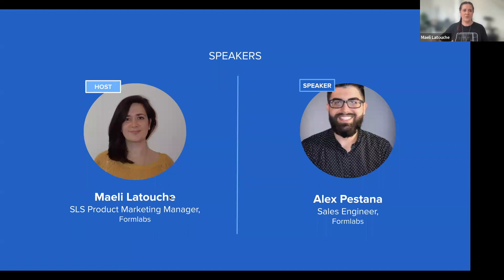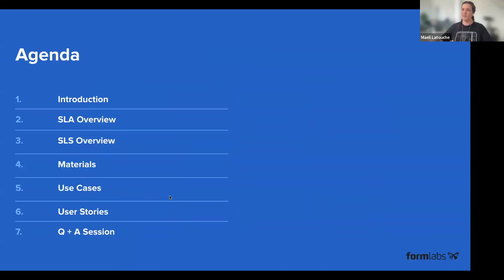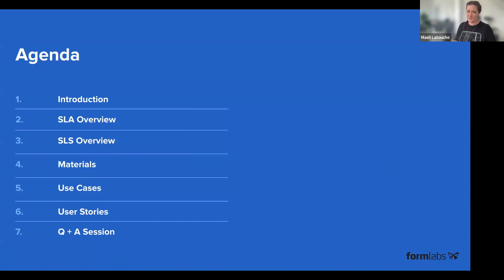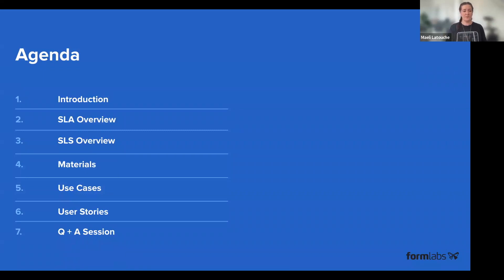I'll cover how the agenda is going to go. First, we're going to have a short introduction. After that, we'll dive into both technologies — first stereolithography, which is our resin technology, and SLS, which works with powders. Then we'll have a deep dive on the materials: for both technologies, what is the range of materials we have, what properties do they have, and what applications they can be used for.